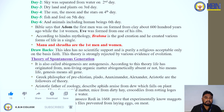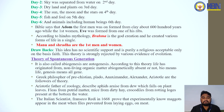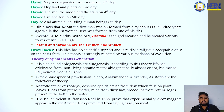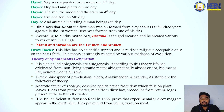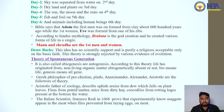The next is the Theory of Spontaneous Generation, also called abiogenesis or autogenesis. According to this theory, life arises from non-living organic matter. Greek philosophers — Plato, Anaximander, Anaximenes, Aristotle — were followers of this theory. Aristotle, the father of zoology, described that eels arise from dew which falls on plant leaves, mice from dirty cloth, and crocodiles from rotting logs at the bottom of the water.